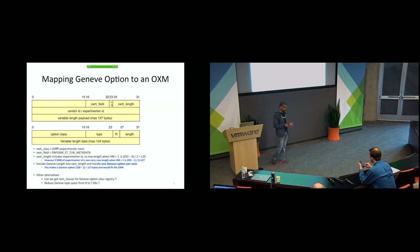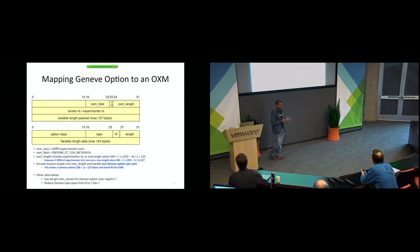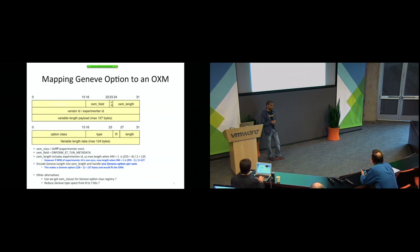One thing that came to mind was that we could use the experimental OXM class and have a new field type for all the tunnel metadata. In my proof-of-concept code, I call it ONF OXM tunnel metadata. This would carry Geneve and Geneve-like traffic. The length field includes the experimental ID. The maximum length that the OXM supports with the experimental class is 125 bytes, but if the MSB of the experimenter ID is non-zero, you can actually support 127 bytes. That's one way to encode a Geneve-sized option into an OXM.